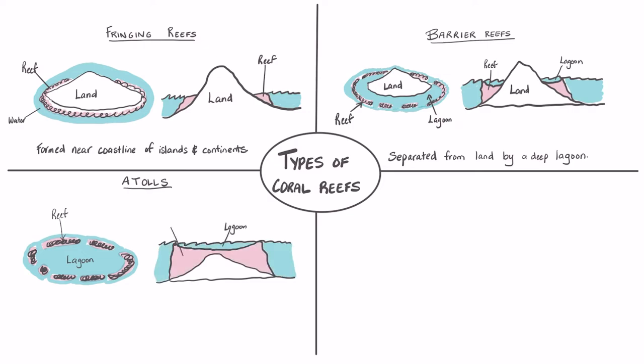There are more than 300 atolls found in the Indian and Pacific Ocean. The water in the lagoon of an atoll is connected to the open sea by gaps found in the coral reef.